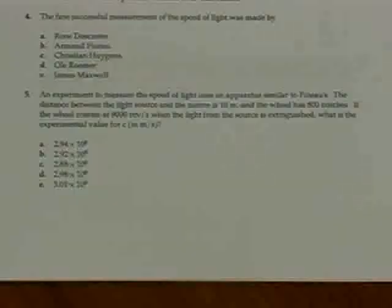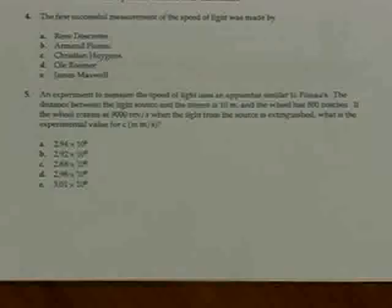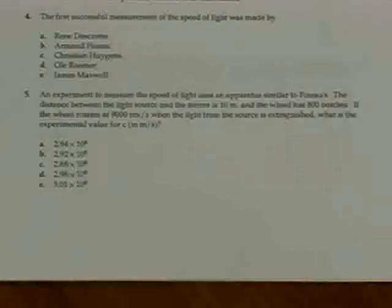Problem number five. An experiment to measure the speed of light uses an apparatus similar to Fizeau's. The distance between the light source and the mirror is 10 meters, and the wheel has 800 notches. If the wheel rotates at 9,000 revolutions per second when the light from the source is extinguished, what is the experimental value for the speed of light C in meters per second?